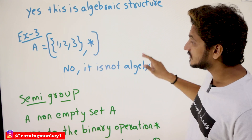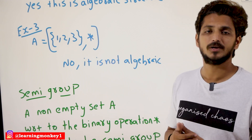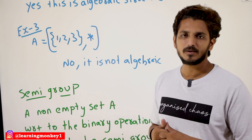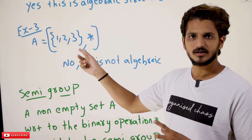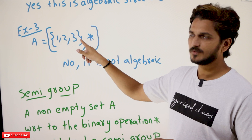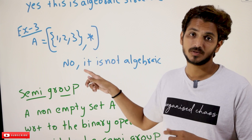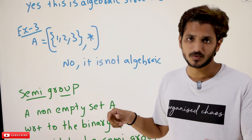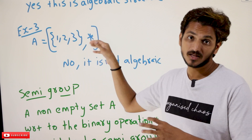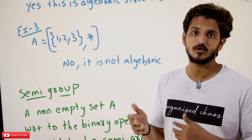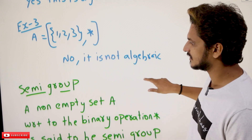Next example: the set {1, 2, 3} with binary operation multiplication. Check: 1 multiplied by 2 is 2, present in the set. 1 multiplied by 3 is 3, present in the set. But 2 multiplied by 3 is 6, which is not present in set A. It is not an algebraic structure because it is not satisfying the closure property — 6 is not there in the set. So this is not an algebraic structure.